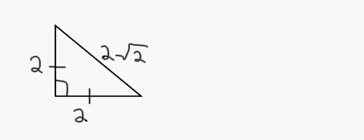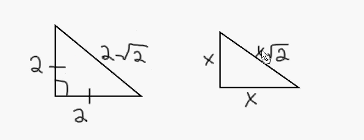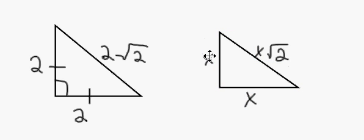Let's say the leg changes like this, you got a 45-45-90 degree triangle. You got an X to the X to the X Radical 2. Break it down — you got an X to the X Radical 2.